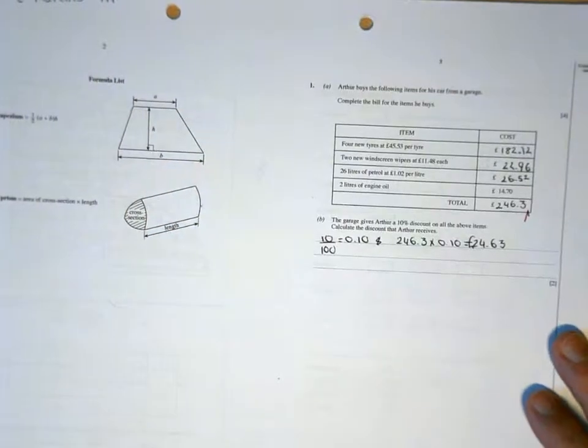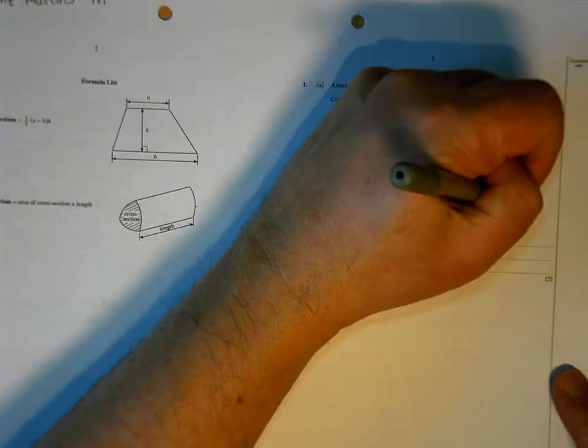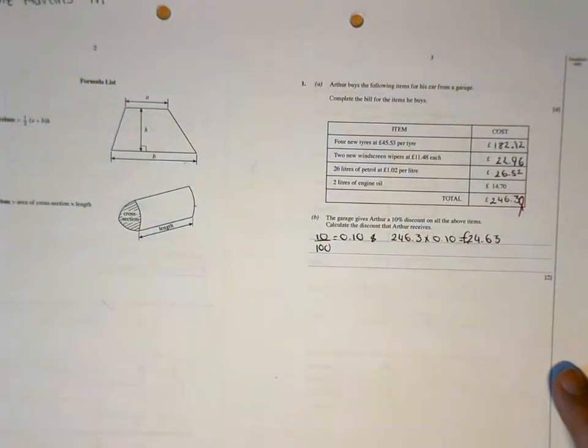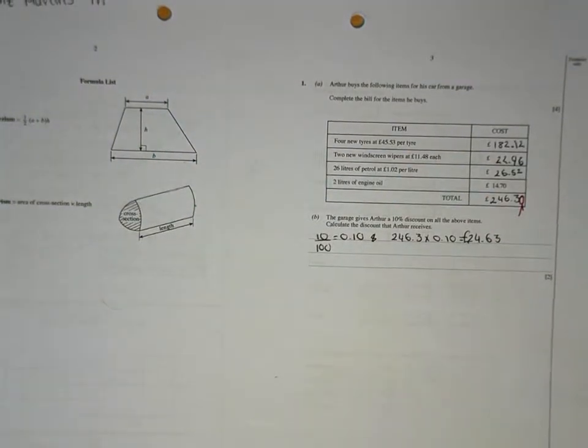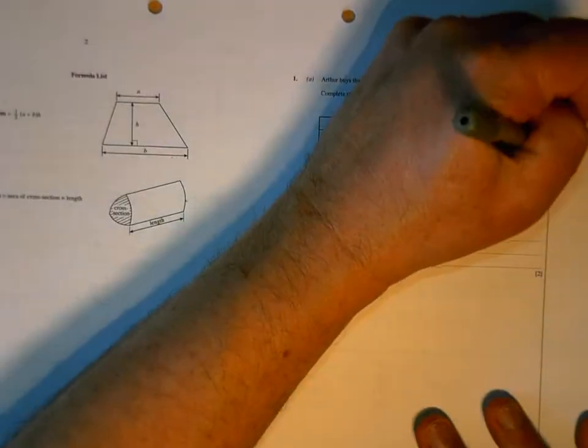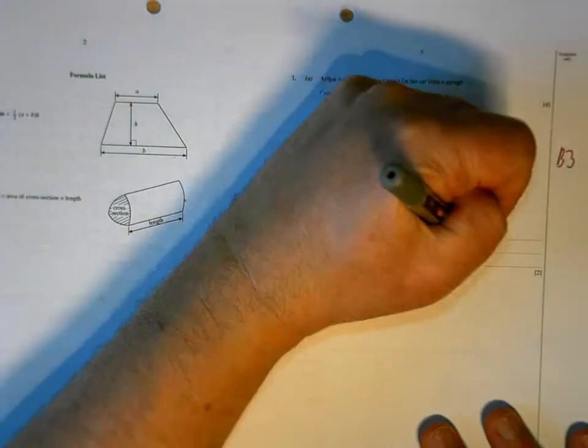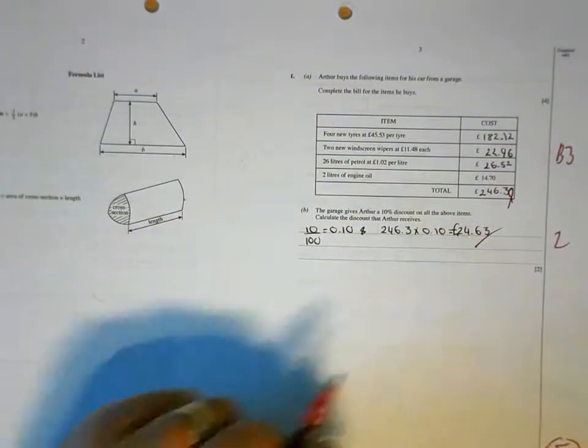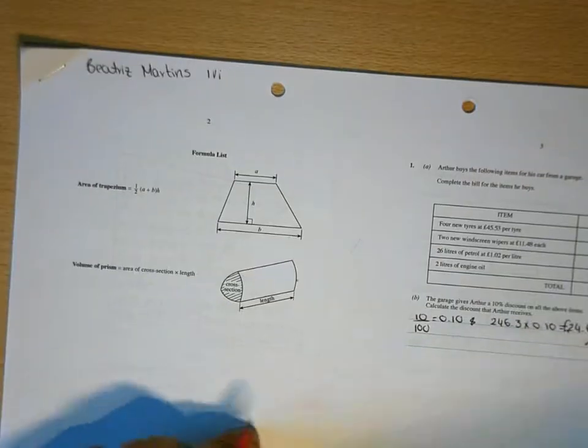Okay, you're going to lose a mark there because the calculator doesn't know you're working with money, so it doesn't stick in that far zero. But because you know you're working in money, you know that you should be writing that as £246.30. So you need to add in that missing zero. And that is correct. So 5 out of 6 marks there.